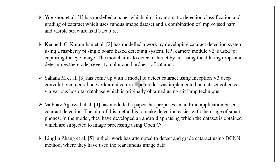One related work describes a cataract detection system using a Raspberry Pi single-board detection system, done by Kenneth C. Carrimahan et al. He used a Raspberry Pi camera module V2 for capturing eye images. The model aims to detect cataract without using dilating drops and determines the grade, severity, color, and hardness of cataract. Deep convolutional neural network is used along with GoogLeNet for transfer learning, with image processing based on LOCS III. Another model detects cataract using Inception V3 deep convolutional neural network architecture, done by Sahana et al.